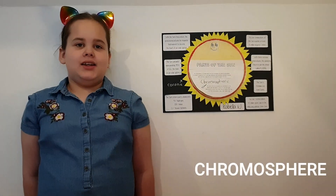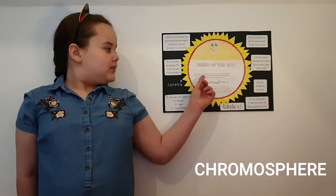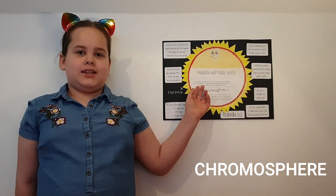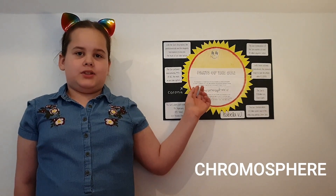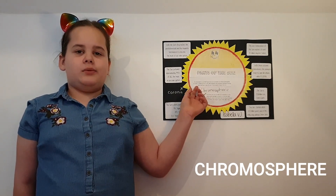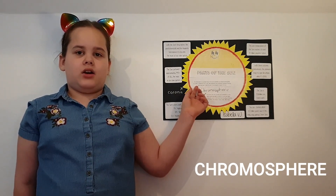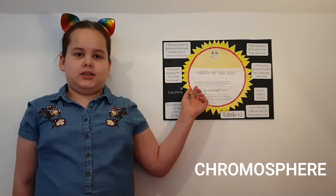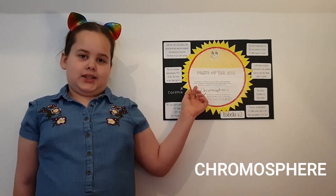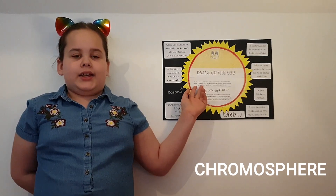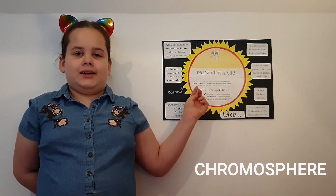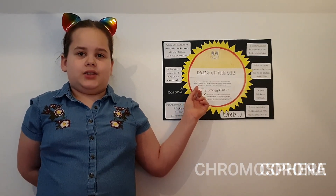Parts of the Sun. The chromosphere is a turbulent layer of the Sun's atmosphere just above the photosphere. It is home to magnificent arcs of gas called prominences and tremendous explosions of energy called solar flares. It gives off most of the ultraviolet UV light of the Sun.